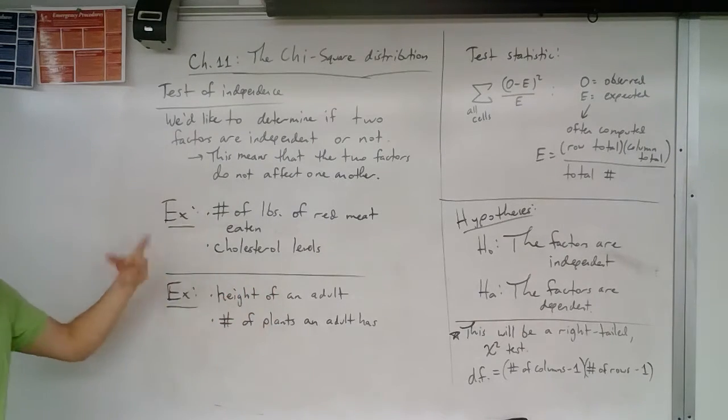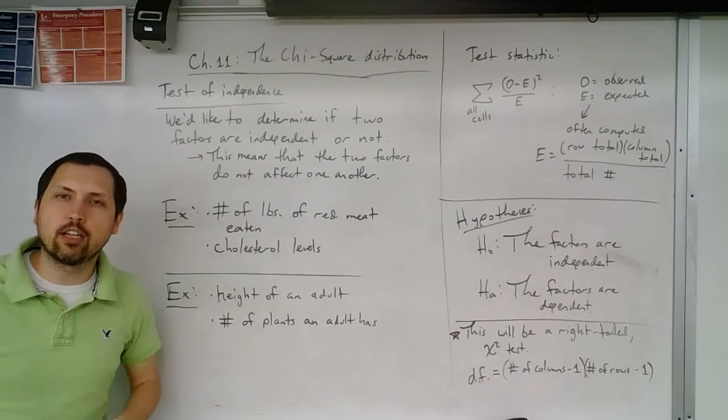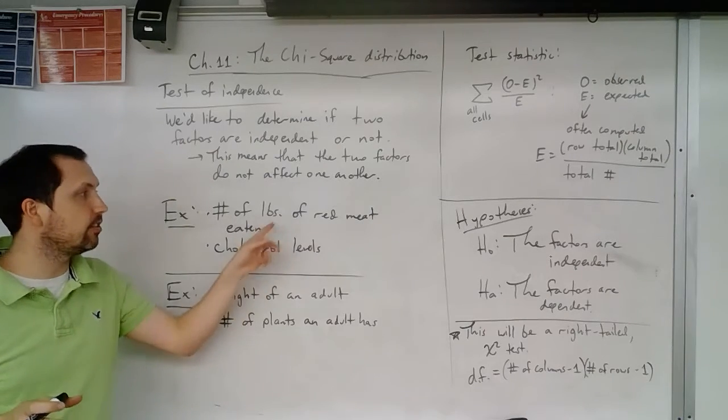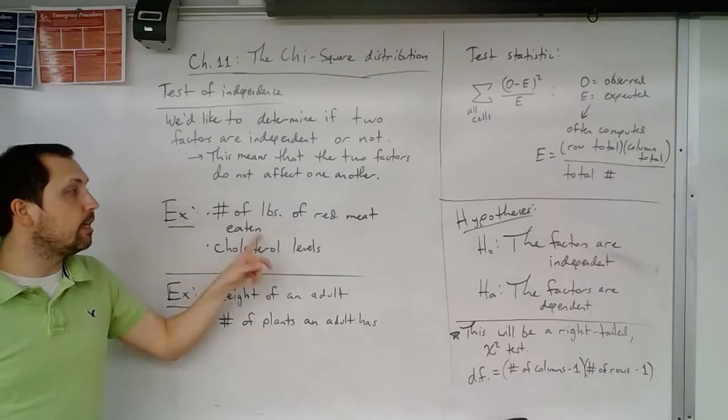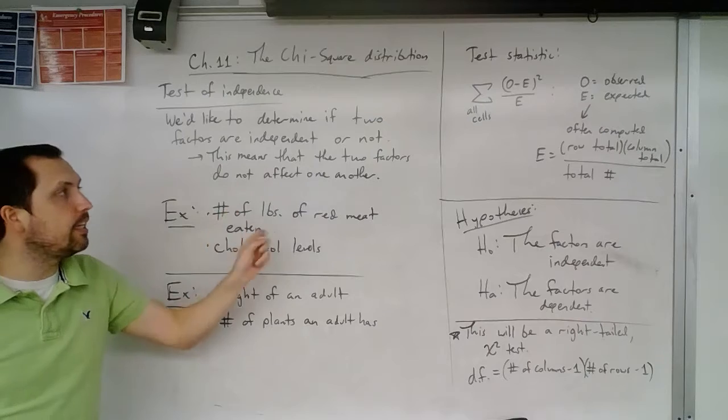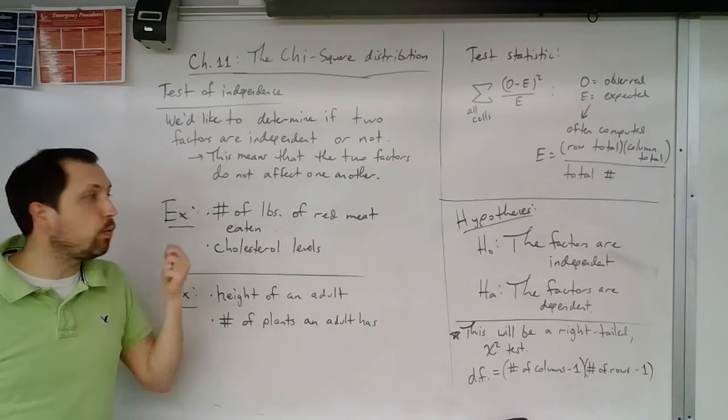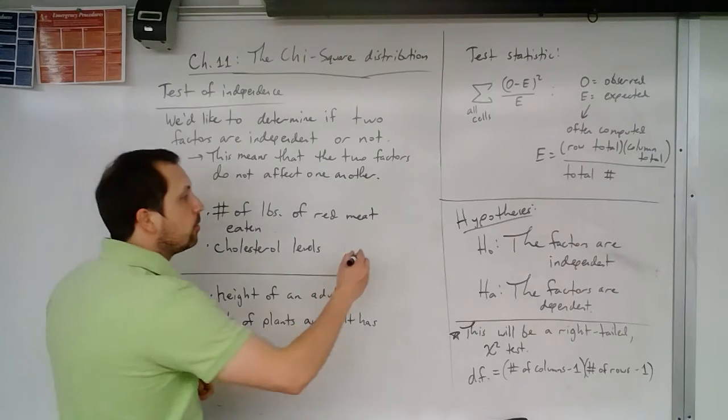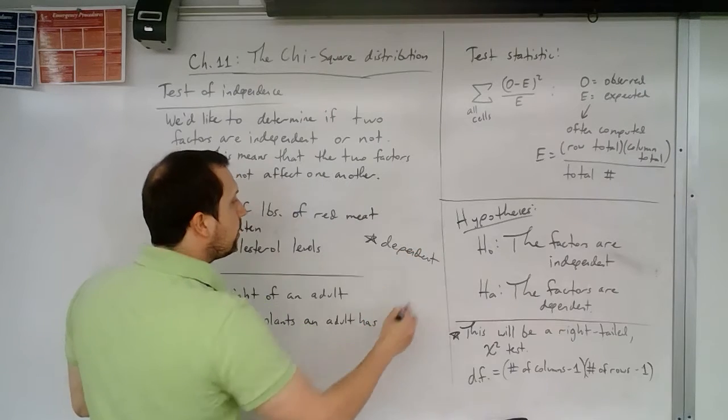But we'll see some examples to build some intuition. The number of pounds of red meat eaten and a person's cholesterol levels - do we think these are independent? So these two factors, if we were to measure this on a person, do we think that these are independent or not? If they are independent, that means that these two do not affect one another. But in this case, we probably think that these two factors are dependent. So this would be an example where two factors are probably dependent.